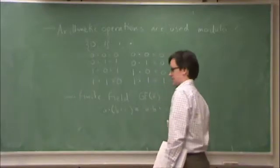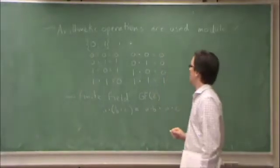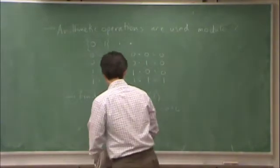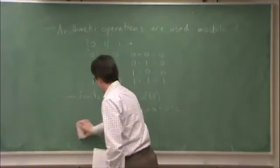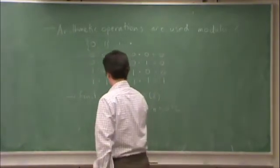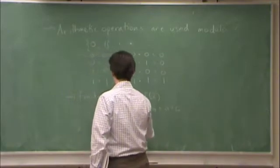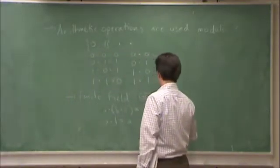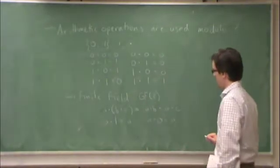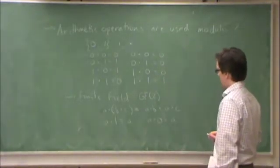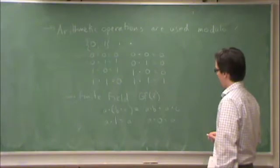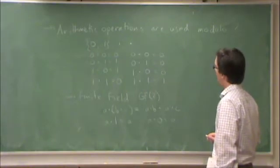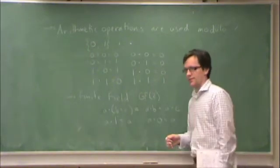Plus A times C. So things like distribution work. Identities. Identity elements work. Like I said a second ago, A times 1 equals A. A plus 0 equals A. In any case, you get the idea.